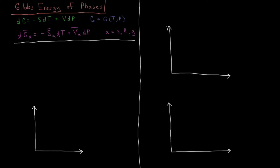In this video we're going to continue looking at the Gibbs energy of the various phases which occur in a phase diagram. We have the differential of the Gibbs energy, which is a function of temperature and pressure, being the negative entropy times dT plus volume times dP. For our molar Gibbs energy, denoted by g-bar, for a given phase alpha — representing either solid, liquid, or gas — we have dg-bar alpha equal to the negative molar entropy of that phase times dT, plus the molar volume of that phase times dP.